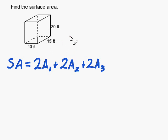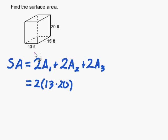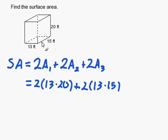So let's go ahead and do that. We do two times thirteen times twenty — this is for the front and the back. Then we do two times thirteen times fifteen — that is the top and the bottom.